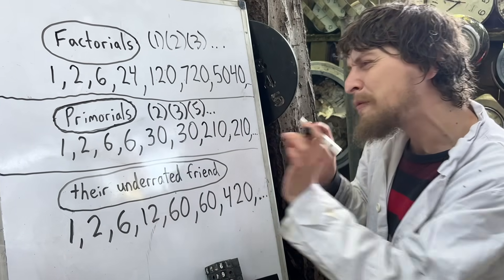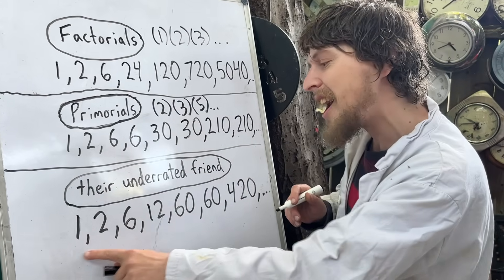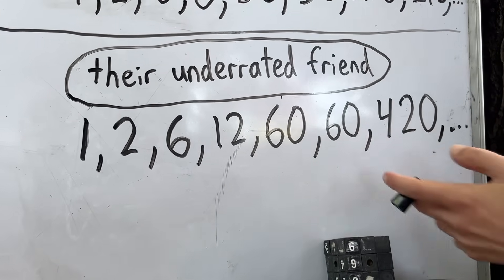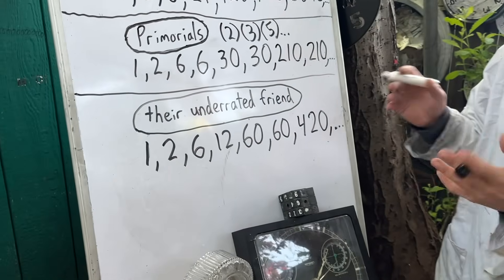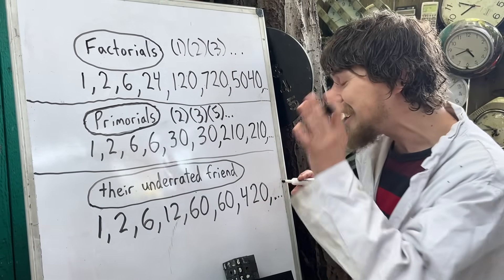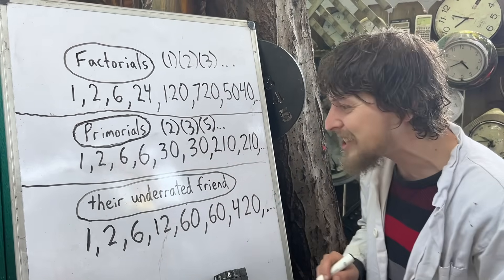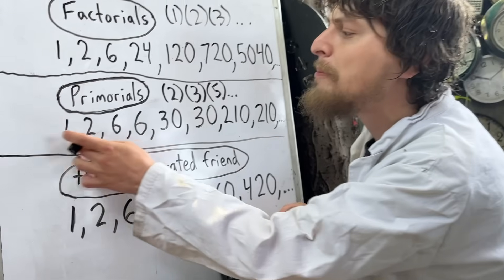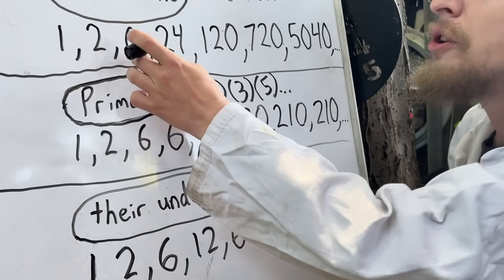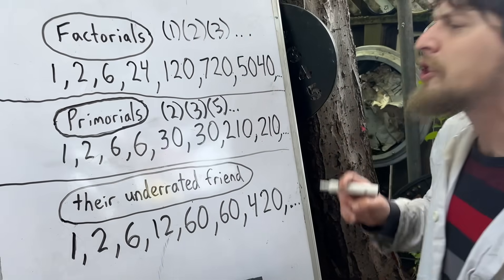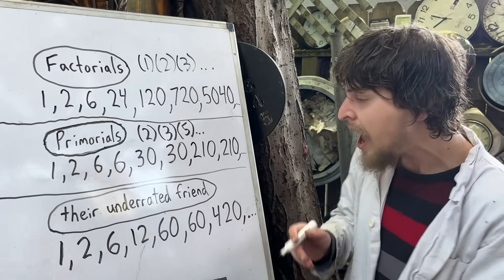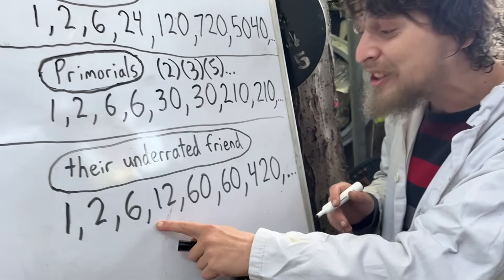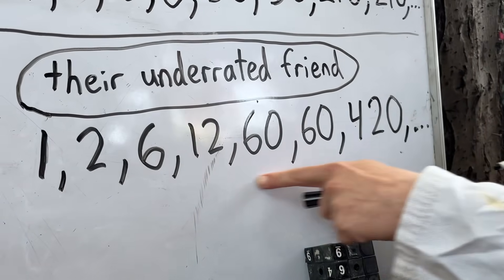Now here, in their underrated friend, we can see that we have a different sort of repetition. We do have some numbers repeating, but not identically to the primorials. We can also see that this underrated sequence has some classic numbers in it. It starts with these amazing ones: 1, 2, and 6, numbers that just break so many records for divisibility, and moves on to some other quite divisible numbers.